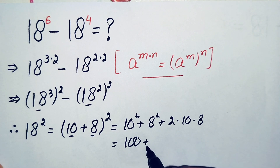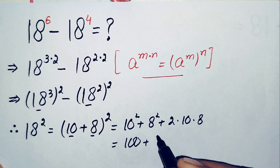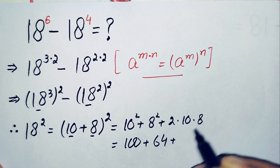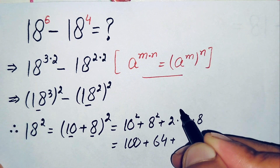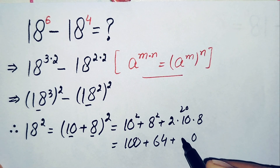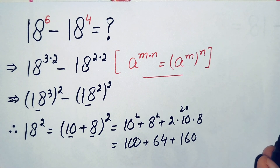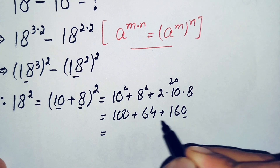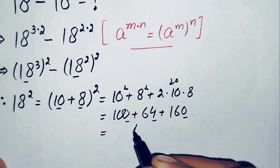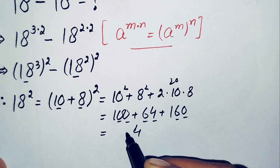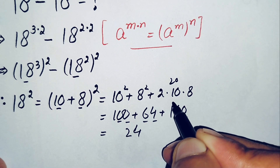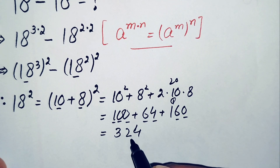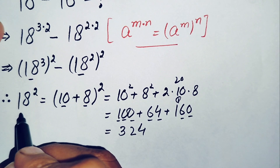So 10² is 100, 8² is 64, and 2 times 10 times 8 is 160. Adding these: 100 + 64 + 160. Starting from the ones place: 0+4+0=4, 0+6+6=12 carry 1, 1+1+1=3. So 18² equals 324.